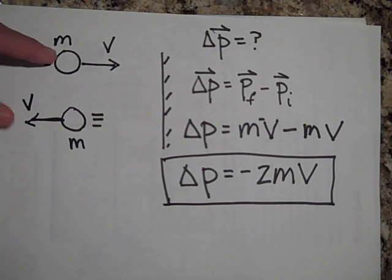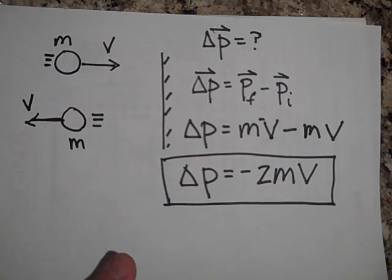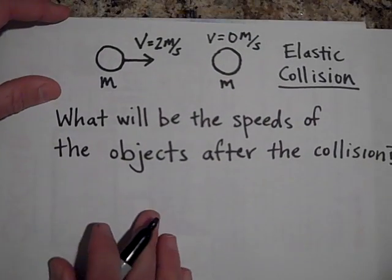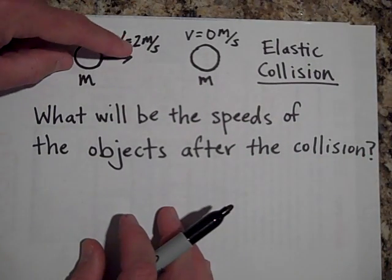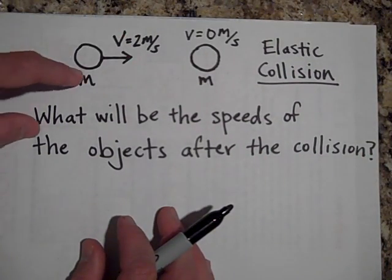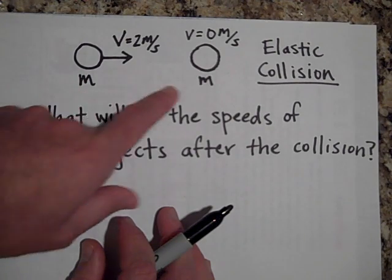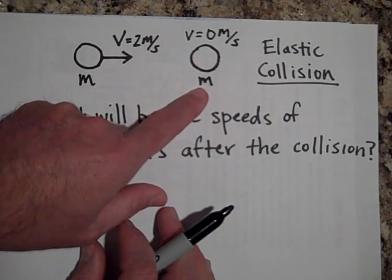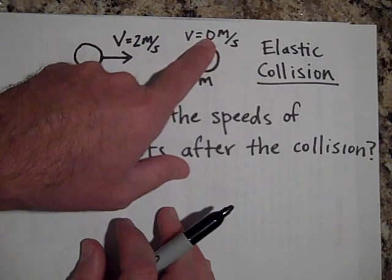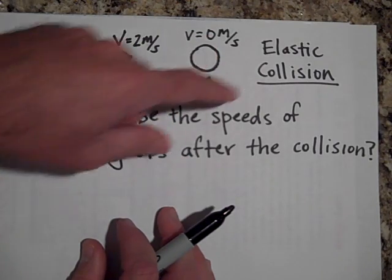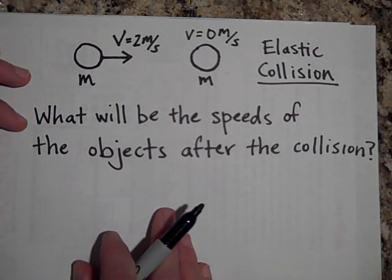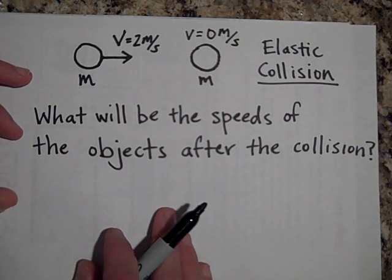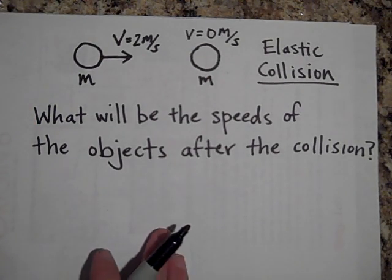If the object was going in the same direction as before, then it wouldn't have changed its momentum. Now we have a mass moving along at 2 meters per second with mass m. It's going to strike another mass m that is not moving at all — but it's a completely elastic collision. What do you think the speed of the first object will be after the collision? Go ahead and pause and take a guess.